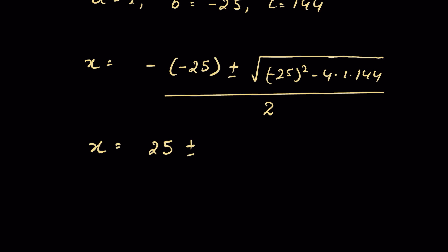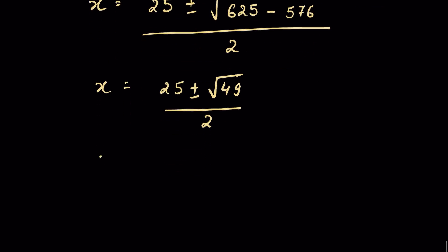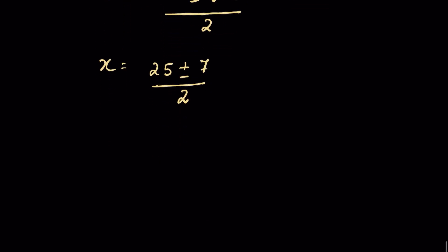Simplifying: 25 plus or minus the square root of 625 minus 576, all upon 2. That gives 25 plus or minus the square root of 49, all upon 2, which is 25 plus or minus 7, upon 2.